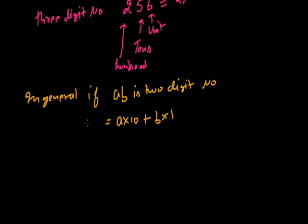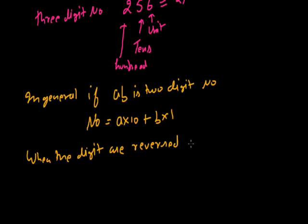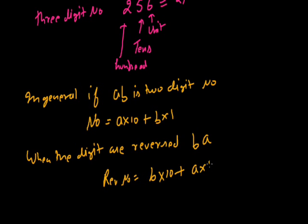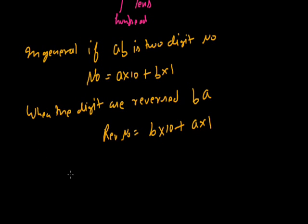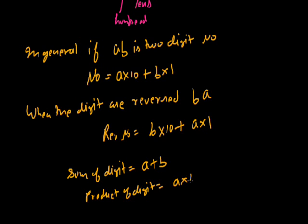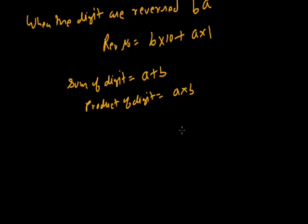Now when the digits are reversed — the tens digit becomes the unit digit and the unit digit becomes the tens digit. If the number is AB and the digits are reversed, then it becomes BA. So we write the reverse number in general form as: B is now the tens digit, so B should be multiplied by 10, and A is now the unit digit, so it should be multiplied by 1. So this is your reverse number, obtained by interchanging the digits. Now if the question gives the sum of the digits, since the digits are A and B, the sum is A plus B. And if the question gives the product of digits, we write A into B. And the number itself is A into 10 plus B into 1.